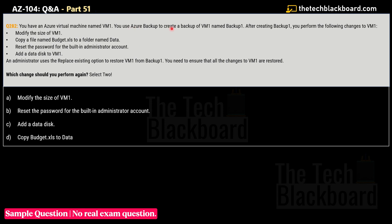Question 282: You have an Azure virtual machine named VM1. You use Azure Backup to create a backup named Backup1. After creating the backup, you perform these changes to VM1: modify the VM size, copy a file named budget.xls to a folder named data, reset the password for the built-in administrator account, and add a data disk. An administrator then uses the 'Replace Existing' option to restore VM1 from Backup1. Which two changes must you perform again?